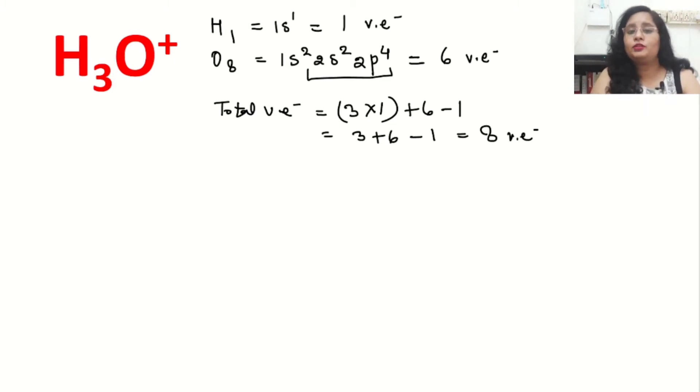So total we have 8 valence electrons that we are going to show in that Lewis structure, not even a single extra electron. Now, which one is the central atom? Always remember: hydrogen and fluorine will never ever be the central atom. So in this case, oxygen will be the central atom and hydrogen will be the surrounding atom.